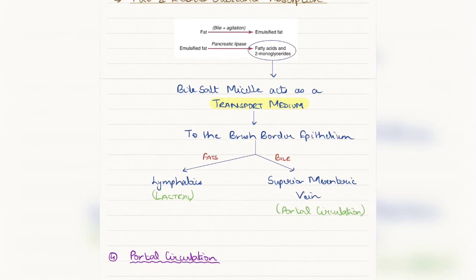In the brush border, there are two pathways. The fats that have been carried are transported or absorbed into the lymphatics, or to be more precise the lacteals, and are taken into the circulation, whereas the bile which is reabsorbed into the superior mesenteric vein gets into the portal circulation back to the liver.